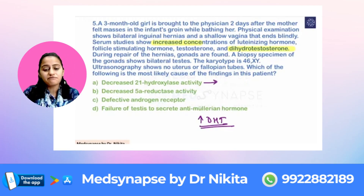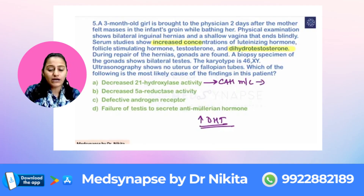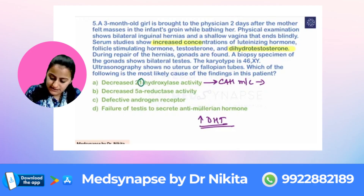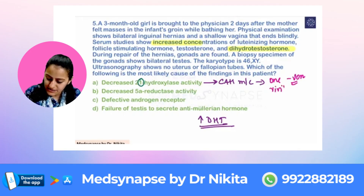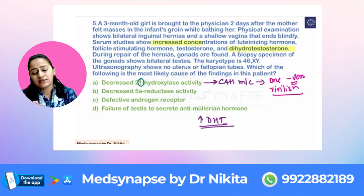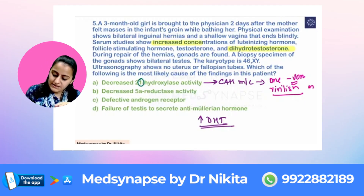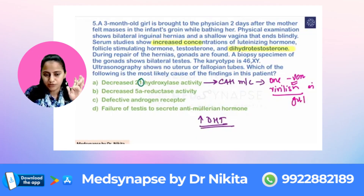Option: Decreased 21-alpha hydroxylase activity — we read this in congenital adrenal hyperplasia. The mnemonic: 21, that is one at the one's place, is related to virilization in a female child. We will see virilization in a female child, and in a male child it is going to be precocious puberty.